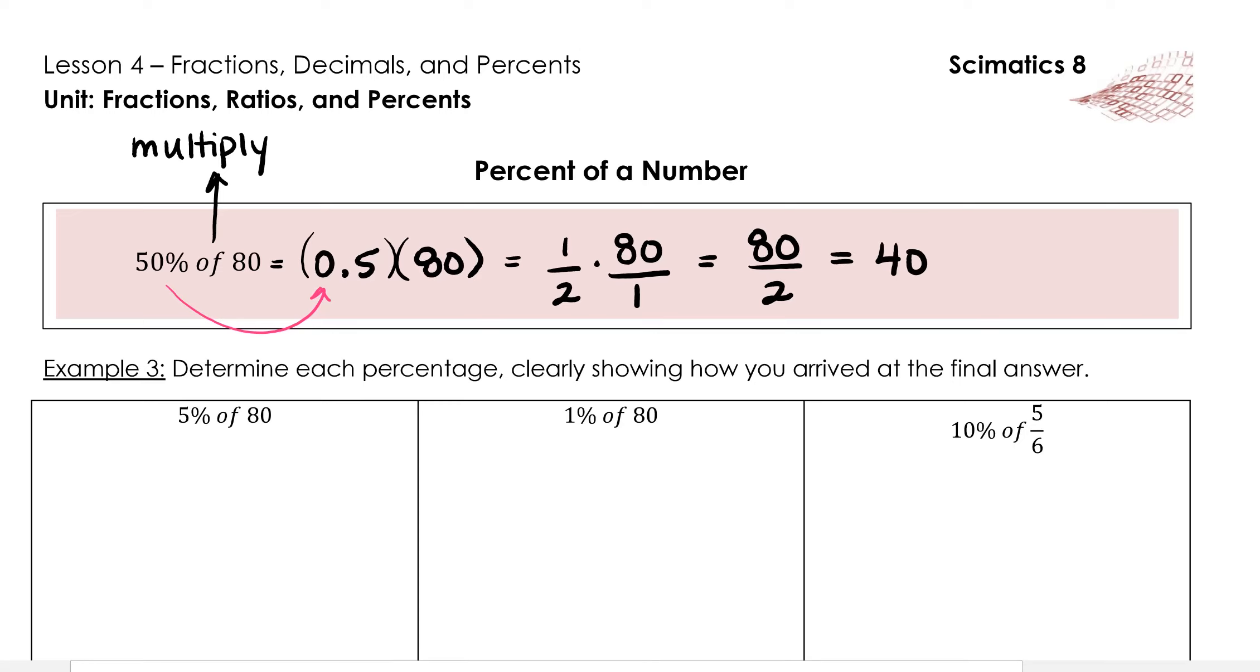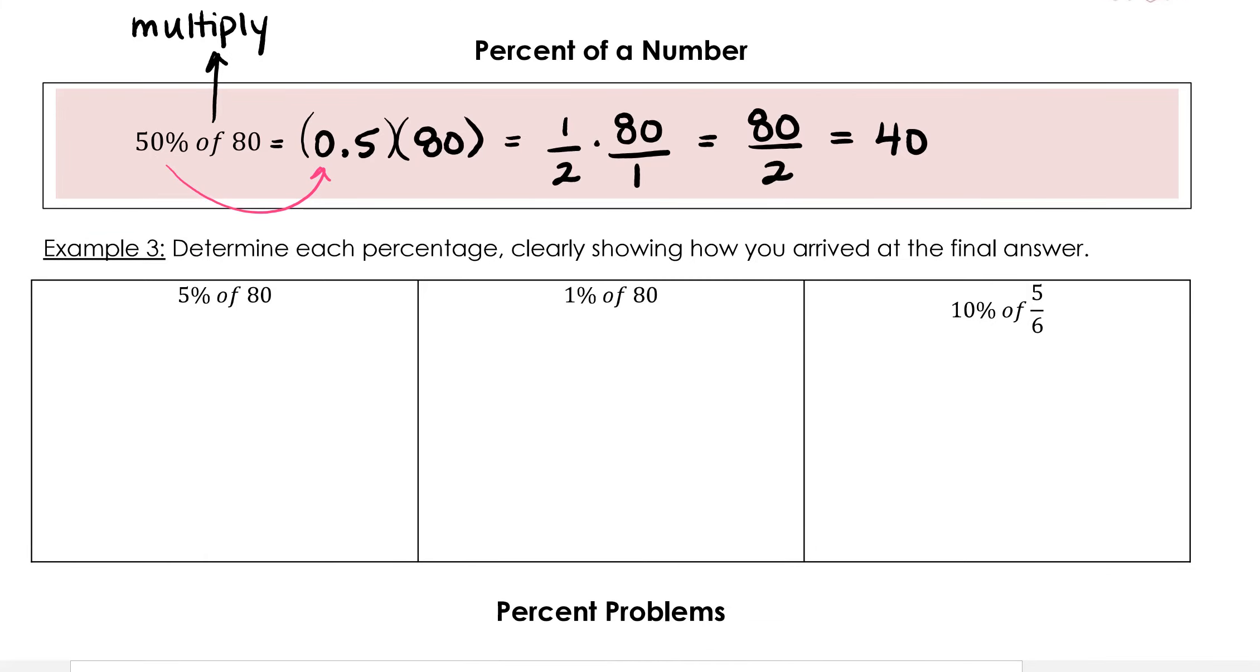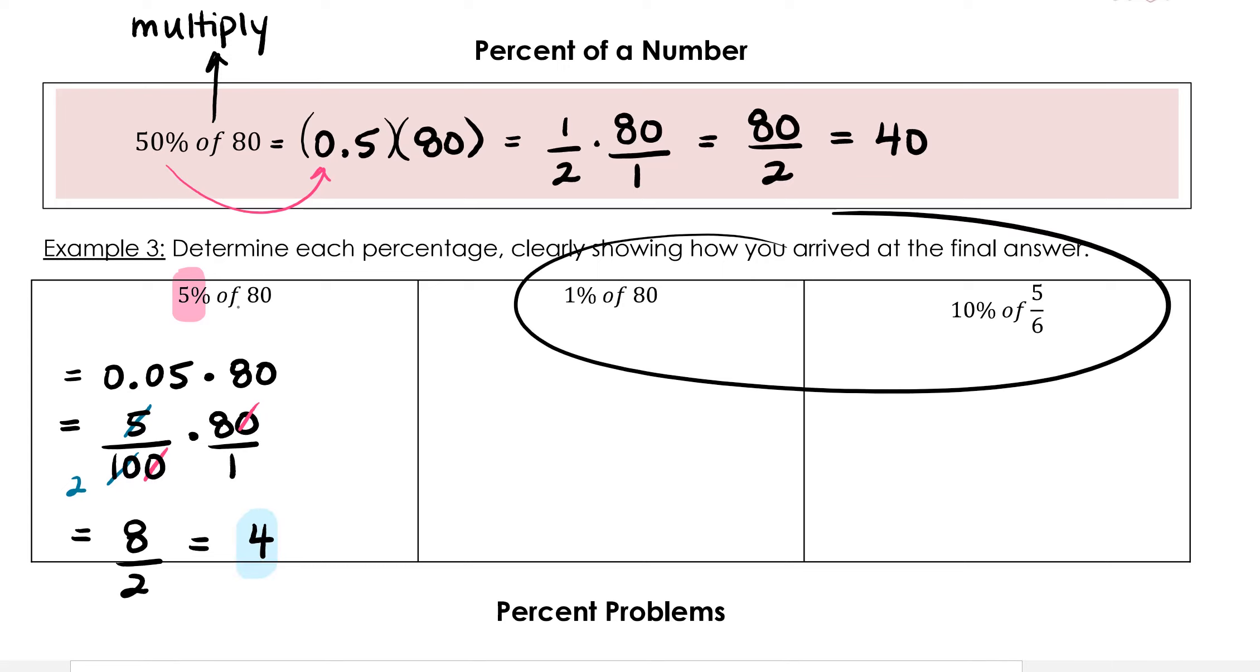Let's do another example together. 5% of 80. 5% needs to be converted to a decimal. This is equivalent to 0.05 times 80, or 5 hundredths times 80 over 1. We can divide top and bottom by 10, and we can further divide 5 and 10. So we are left with 8 over 2, which simplifies to 4. Please pause the video here while you try these examples on your own.